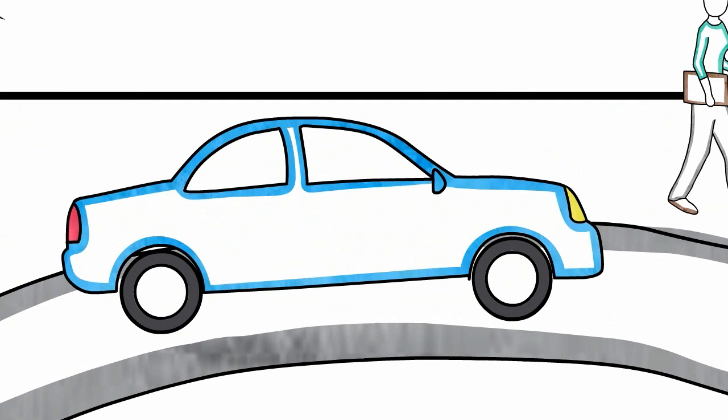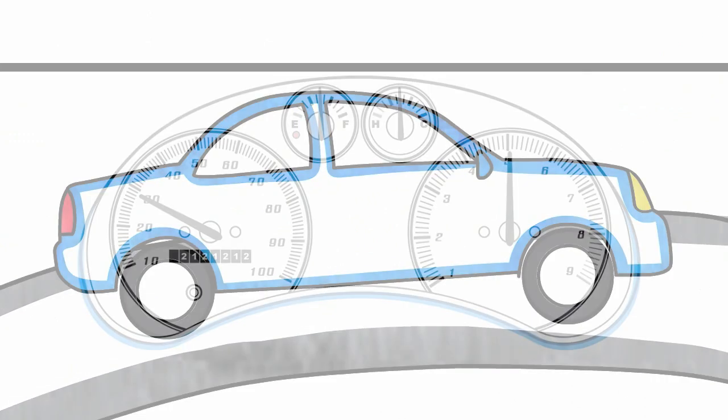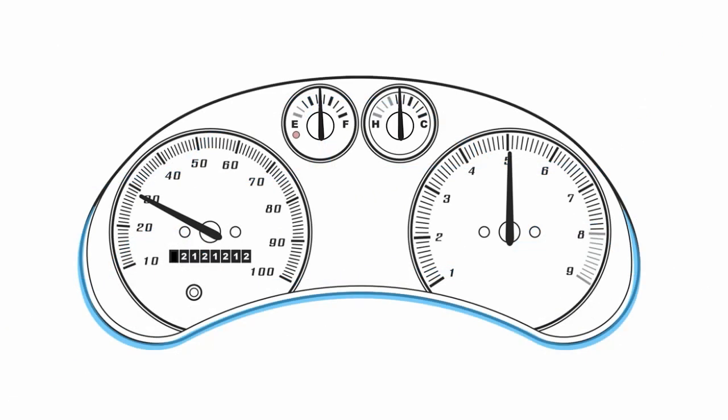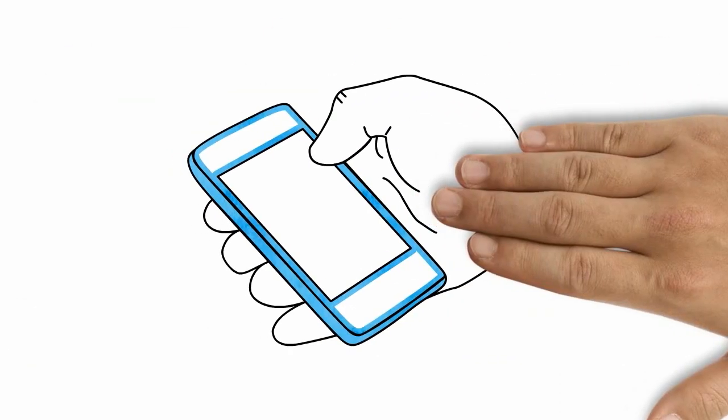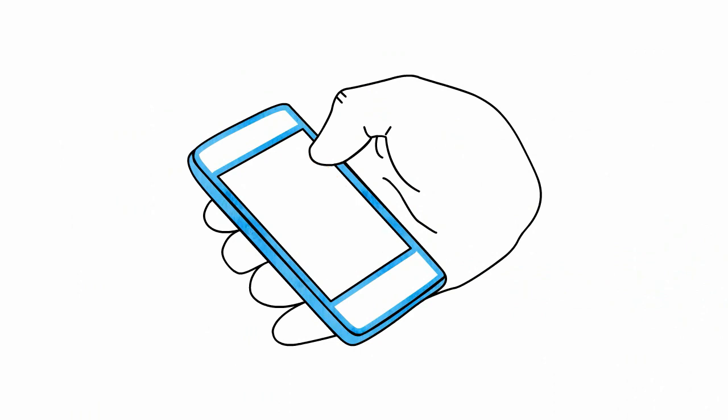Indicators are a part of everyday life. In your car, indicators like the check engine light and temperature gauge alert you to potential issues with the engine. In your home, the battery icon on your cell phone or tablet gives you an idea of how much power and time you have left.